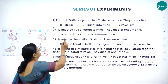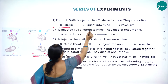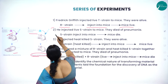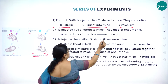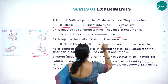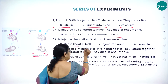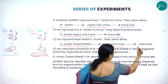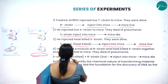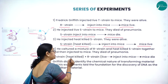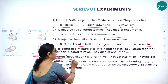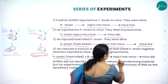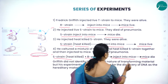To summarize: Frederick Griffith injected R-strain into the mice — mice lived. Second step, S-strain injected into the mice — mice died. Then heat-killed S-strain injected into the mice — mice lived. Then he took a mixture of heat-killed S-strain plus live R-strain and injected into the mice — mice died.